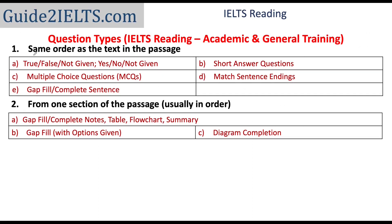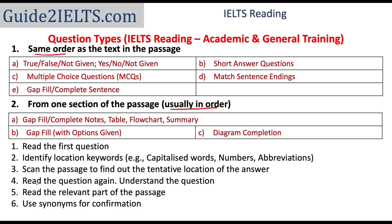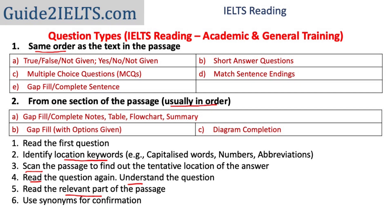Most question types have answers in the same order as the information in the text. For all of these question types, the target is always to look for location key information in the questions, scan the passage for the location of the answer, then read the question carefully, understand it, and focus on that part of the passage where you expect the answer to be. Questions with answers in the same order — or even slightly out of order but close by — are slightly easier than other question types. All the different methods I've recommended are just recommendations and suggestions.